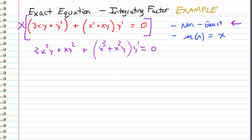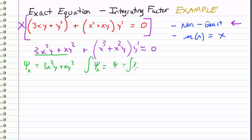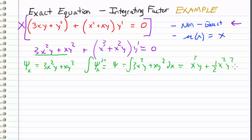If we choose this as our m and this as our n and take the partial derivatives, they would be equal because our integrating factor has successfully made this an exact equation. Now it's just a matter of solving it like any other exact equation. Let's say that psi sub x equals 3x squared y plus xy squared. Integrating psi_x gives us psi equals the integral of 3x squared y plus xy squared dx, which is x cubed y plus one-half x squared y squared, plus a function of integration g of y.